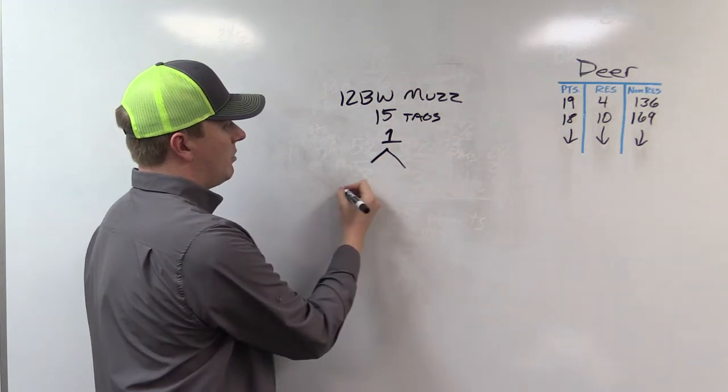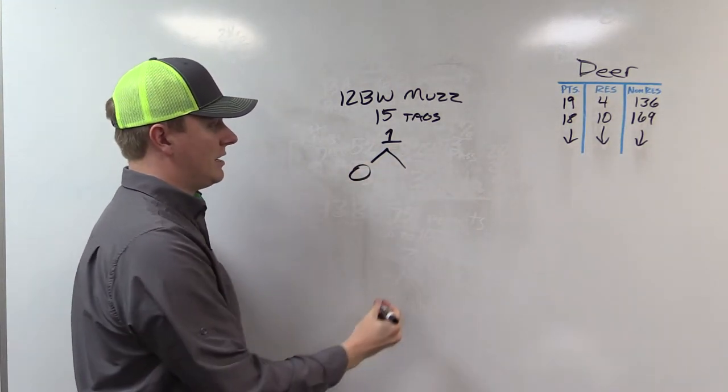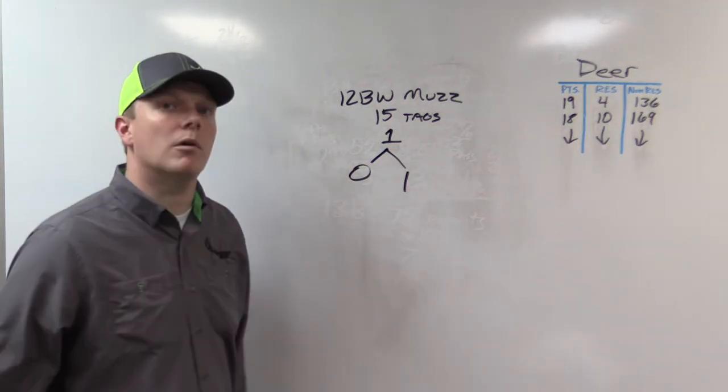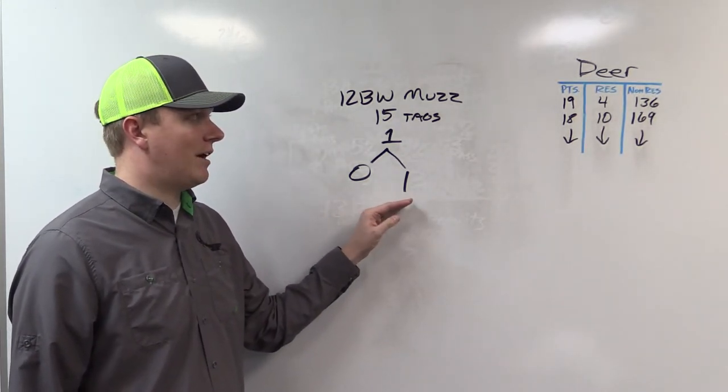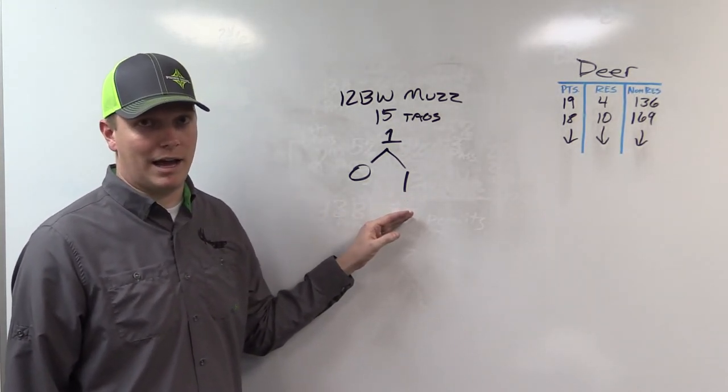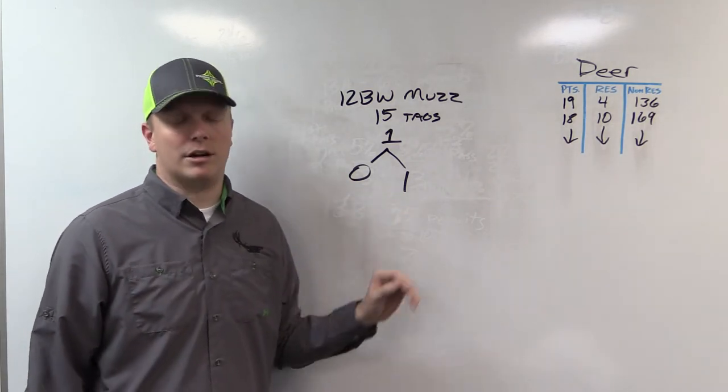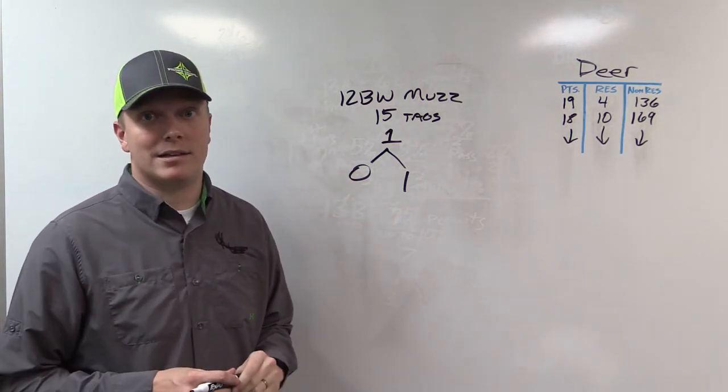So if you have max points in the first pass, there's zero tags available. Random, there's up to one. Okay, so you're going in random. Even if you have maximum points, you cannot draw that in the bonus pass. You're going to draw it in the random pass, if at all.